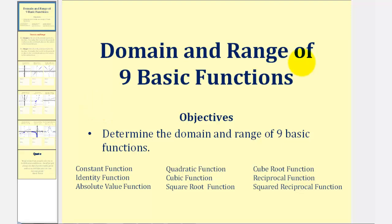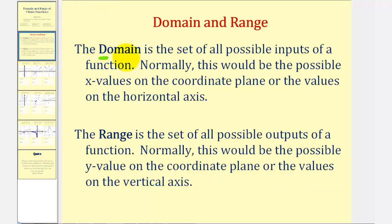Welcome to a quick review of the domain and range of nine basic functions. The domain is the set of all possible inputs of a function — normally the possible x values along the horizontal axis. The range is the set of all possible outputs — normally the possible y values along the vertical axis. By analyzing the behavior of the graph along the horizontal and vertical axes, we can determine the domain and range of our functions.